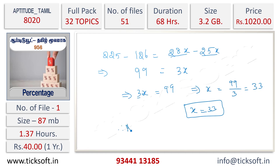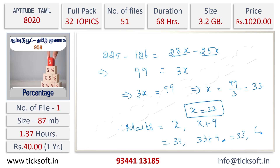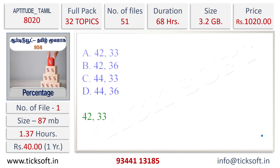Therefore their marks will be equal to x and x plus 9. x's value is 33, and x plus 9 is 33 plus 9, which equals 42. So the two students' marks are 33 and 42. The correct answer is option 42 and 33.